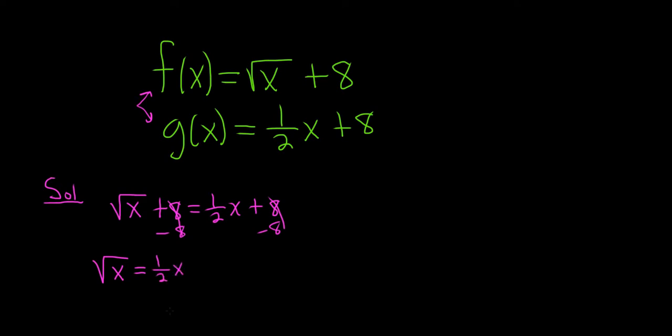And I guess we can square both sides now to get rid of the square root. It's going to give us x equals one-fourth x squared. Right, you square the one-half, you square the x, and we get here. And we have to solve this quadratic equation so we can set it equal to zero.